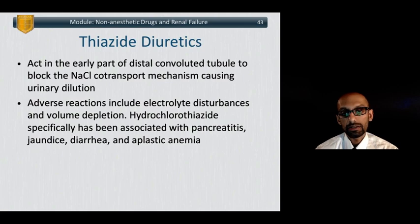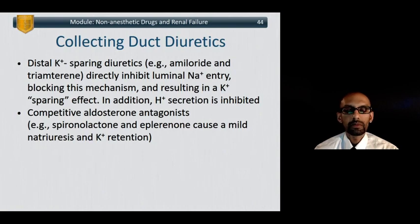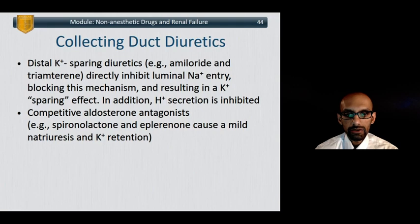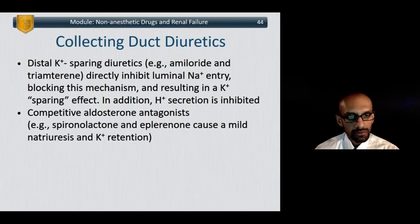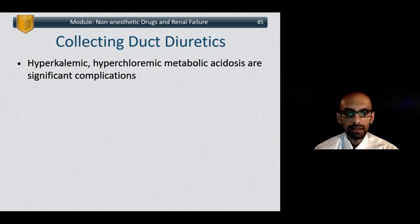Thiazide diuretics act in the early part of the distal convoluted tubule to block sodium transport. Adverse reactions include electrolyte disturbances and volume depletion. Hydrochlorothiazide specifically has been associated with pancreatitis, jaundice, diarrhea, and aplastic anemia. Then we have diuretics that work at the collecting duct — so-called potassium-sparing diuretics, essentially aldosterone antagonists. Amiloride and triamterene directly inhibit luminal sodium entry, whereas spironolactone is a putative aldosterone antagonist. Aldosterone normally resorbs sodium and excretes potassium and hydrogen ion; these drugs do the opposite, sparing potassium and hydrogen ion. With excessive use, expect hyperkalemia and acidosis.